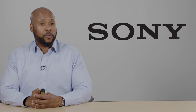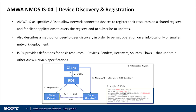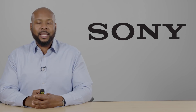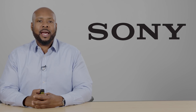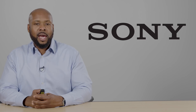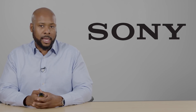IS-04 and IS-05 have already been released, and we expect IS-06 to be released by the end of this calendar year. IS-04 specifies APIs to allow network-connected devices to register their resources on a shared registry, and for client applications to query the registry and subscribe to updates. In layman's terms, it effectively allows for edge devices or endpoints to connect to the topology and announce their presence and what features and functionality they offer to the broadcast network controller.